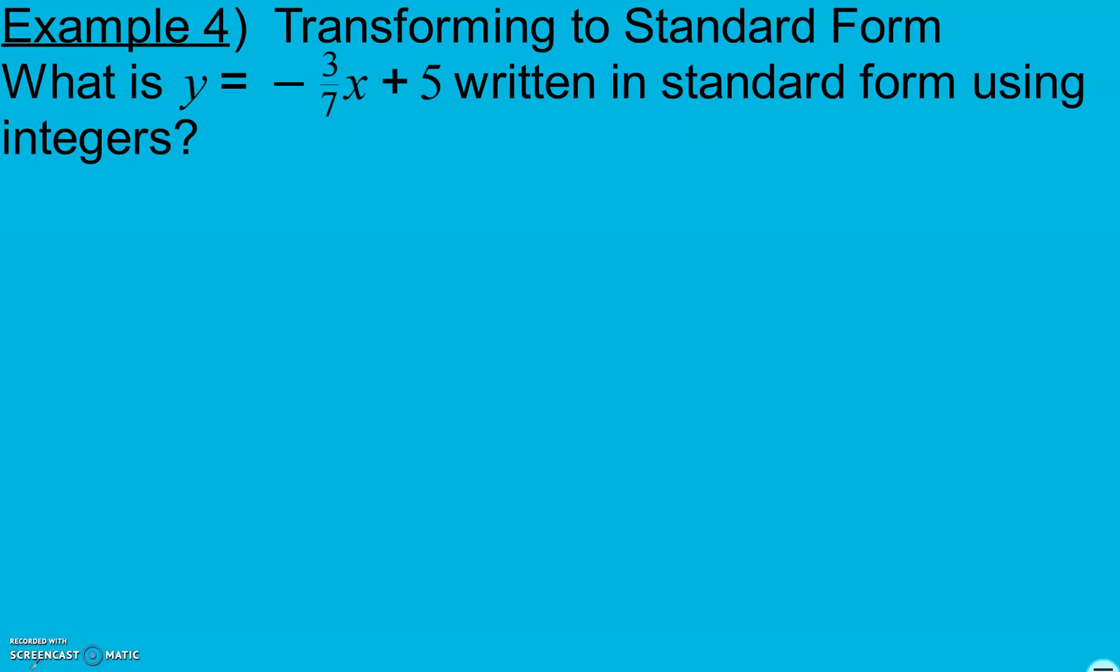In example 4, we're going to transition to standard form. So right now I have an equation y equals negative 3 sevenths x plus 5 and we're going to write it in standard form using integers. It's in slope intercept form right now y equals. We want to write it in standard form. So here we're going to get our variables on one side in alphabetical order equals to a constant and it says using integers which means no fractions, no decimals. So right now I have a y on the left, a constant and an x term on the right. I'm going to move my x to the other side. So I'm going to add 3 sevenths x. Anytime I move from one side to the other I have to do the opposite. And what this does is it gets my x term and my y term on the same side.